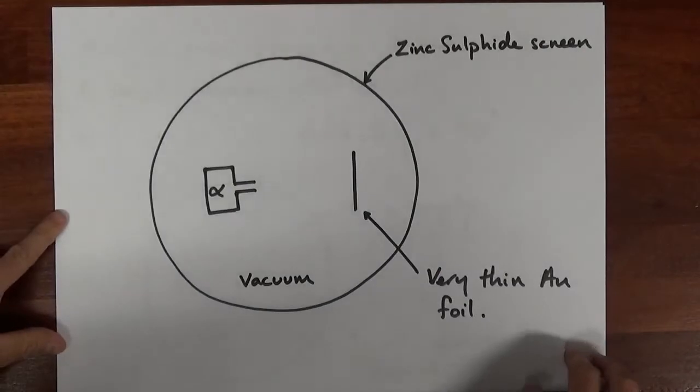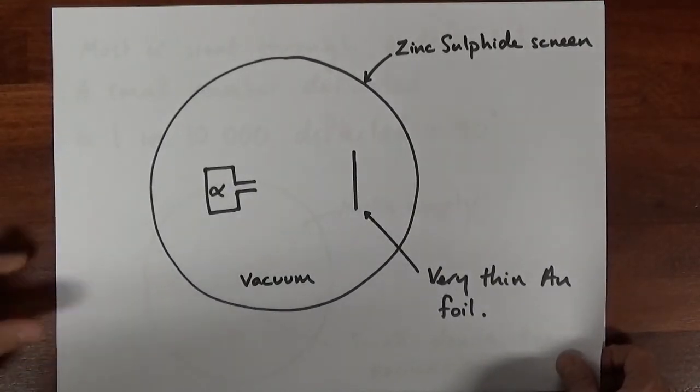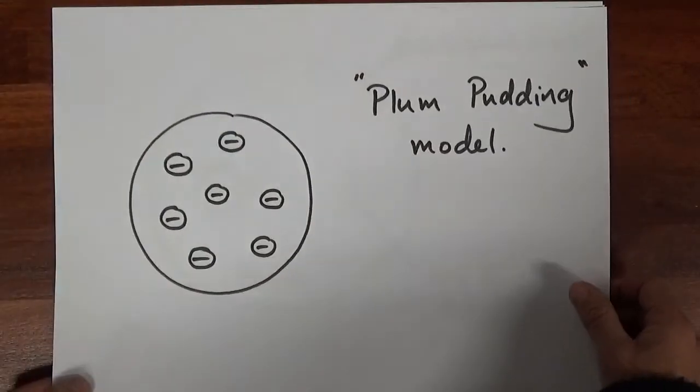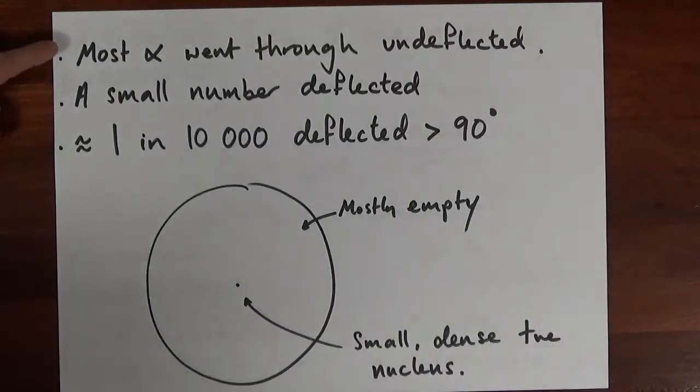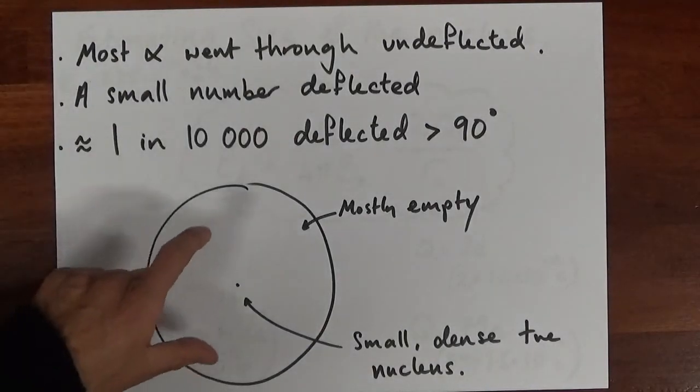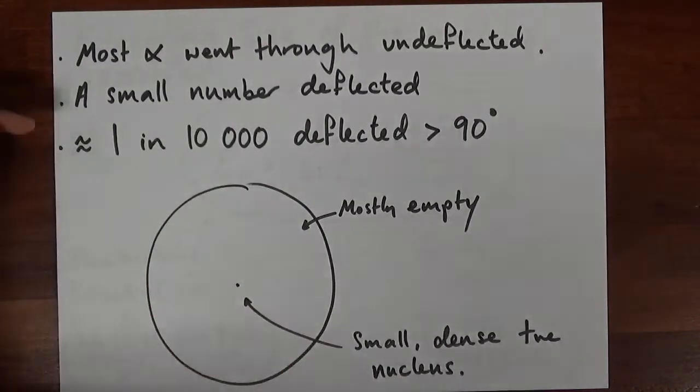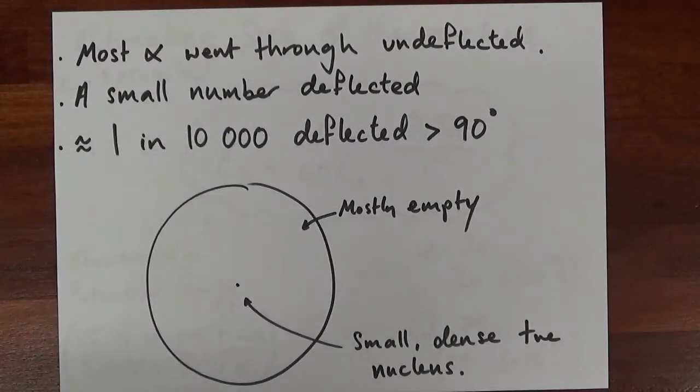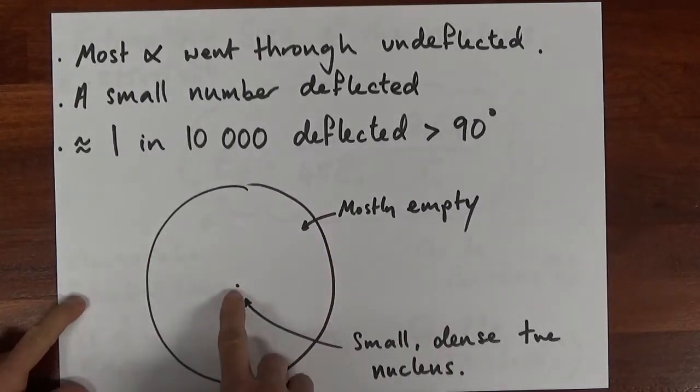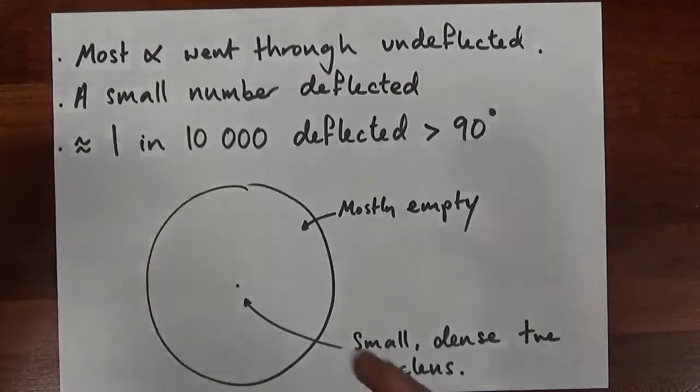This was very remarkable - Rutherford wasn't expecting this and it led to the need to revisit and revise this idea of the plum pudding model. Because most of them went through undeflected, that meant the atom must be mostly empty space. Because a small number were deflected, it meant there must be some positive charge in a concentrated form that's doing the deflection. And because a very small number, like one in ten thousand, were deflected by really large angles, this thing that's doing the deflecting must be incredibly dense and have most of the mass of the atom concentrated in that small point. So we came up with a revised model of the atom in which the nucleus is very small, very dense, and around it is a sea of electrons. That is Rutherford's model of the atom.